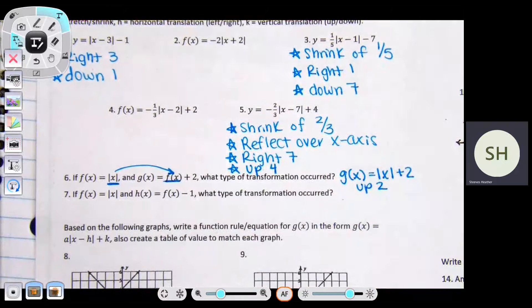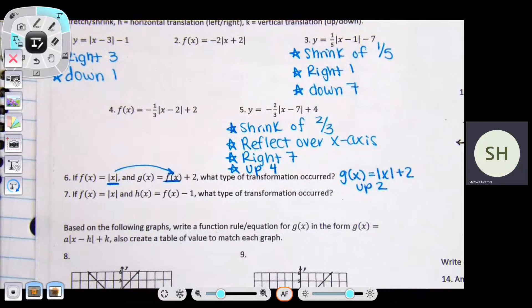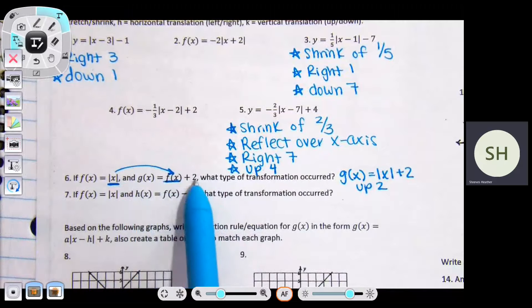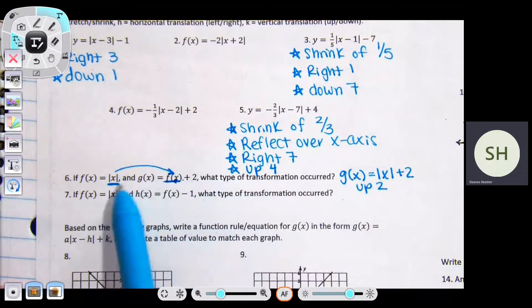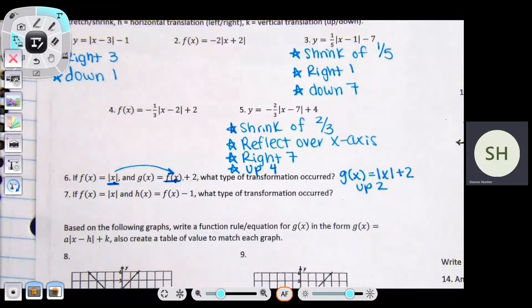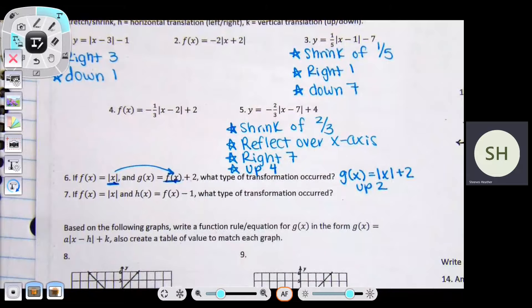Because the two is on the outside of the parentheses, that would not represent it being placed inside the brackets. That plus two is outside, so that's representing k outside. If the two is on the inside of the parentheses, that would represent left or right.